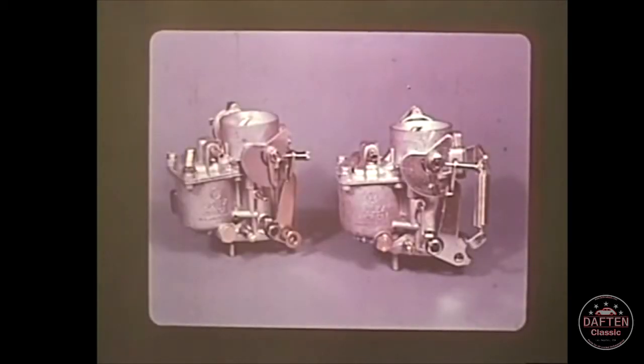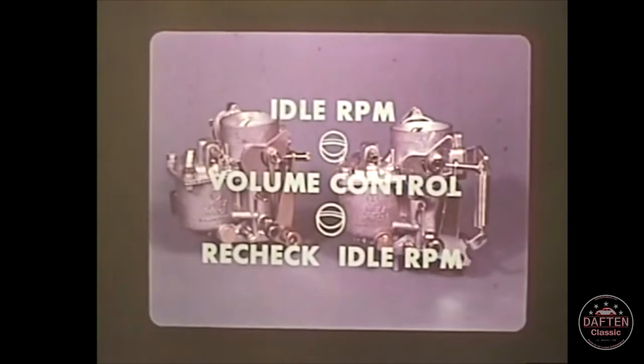We've been talking generally about the 28 PICT and the 30 PICT carburetors. Although they are different models, they do have the same adjusting sequence: first the idle RPM, then the volume control screw, and finally check the idle RPM again.